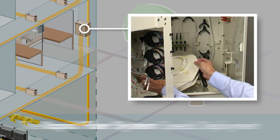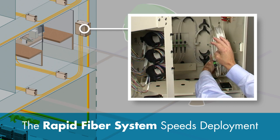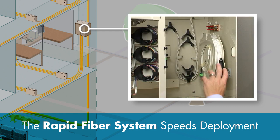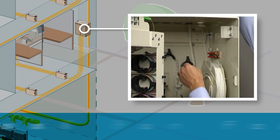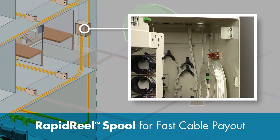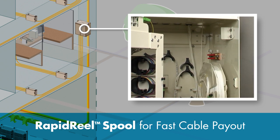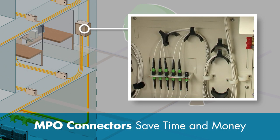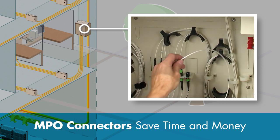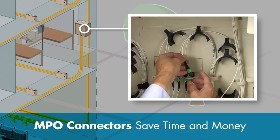Optical LAN incorporates CommScope's Rapid Fiber System, which tackles both cost and cable management challenges. A true plug-and-play solution, the system features CommScope's innovative rapid-reel spooling technology into the indoor fiber distribution hub. The IFDH uses MPO connectors rather than splicing or direct termination, which means faster, less costly installations.